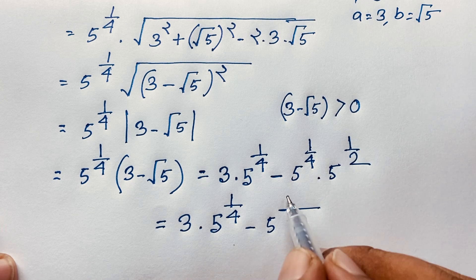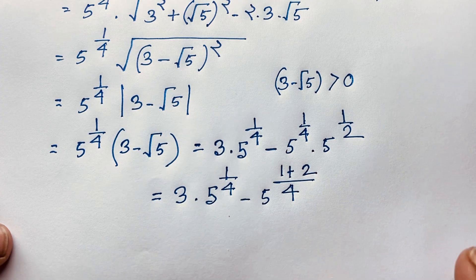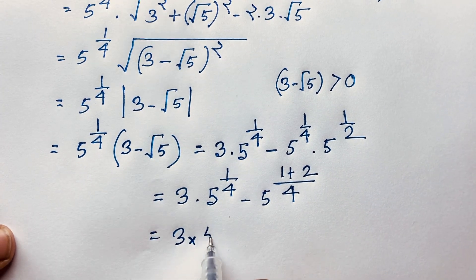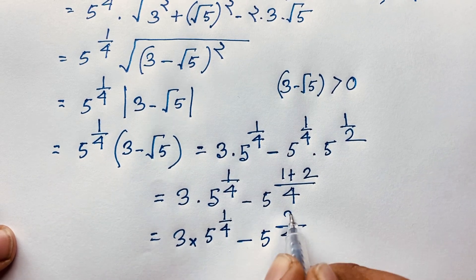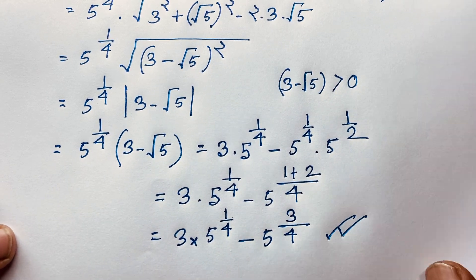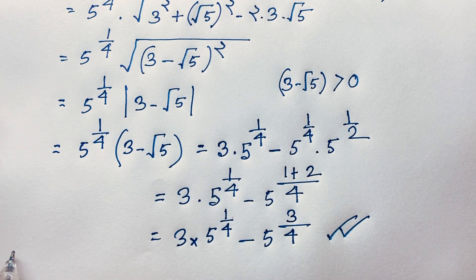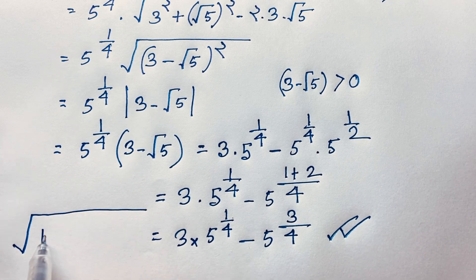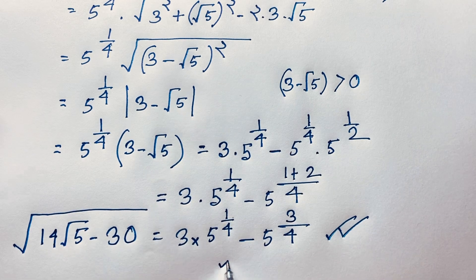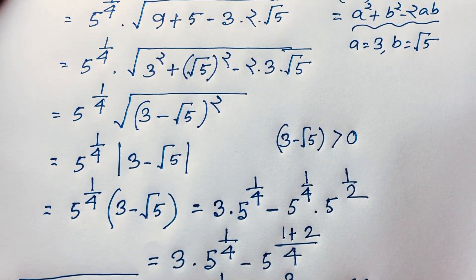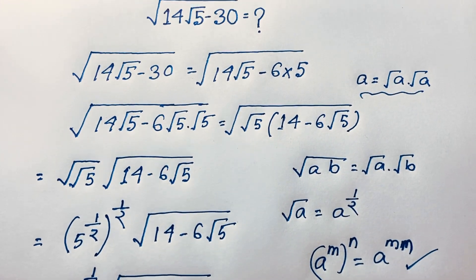This is our final answer for the radical math question. So √(14√5 minus 30) equals 5^(1/4)(3 minus √5). Thank you all — if you enjoyed this video, please subscribe to my channel for more interesting videos. Goodbye, take care!